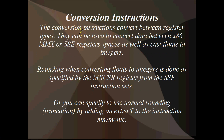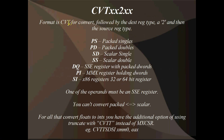Alrighty, the conversion instructions - this is the body of the tutorial. There are an awful lot of these, and I think we'll pretty much just list them all and then have a look at a few in detail as examples. These are the conversion instructions, and they convert between register types. You can convert between x86, MMX, or SSE register spaces, as well as cast floats to integers and back again. Rounding when converting to integers is done as specified by the MXCSR register. Or you can specify truncation by adding a T to a bunch of these instructions.